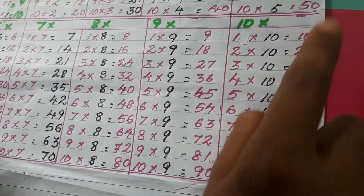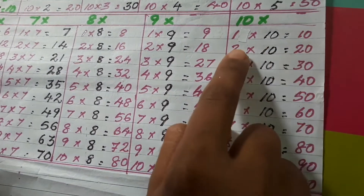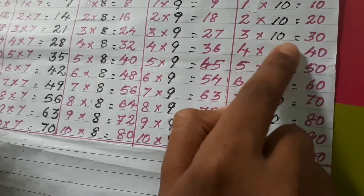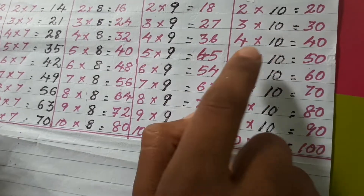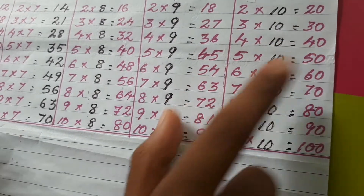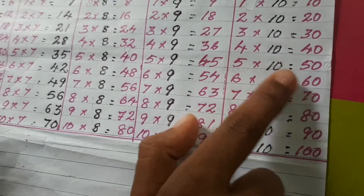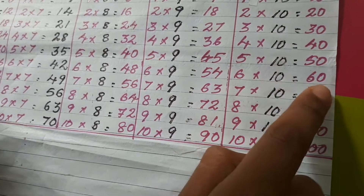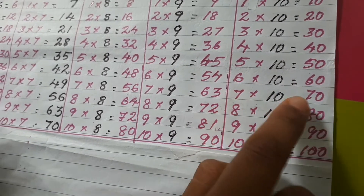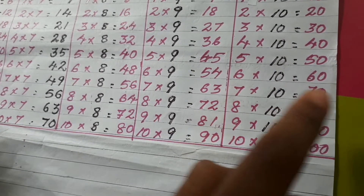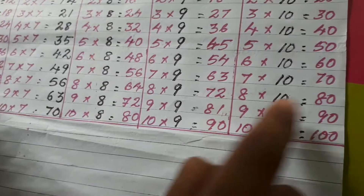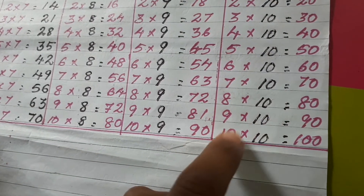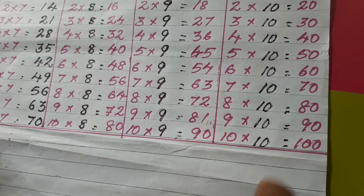1 ten is 10. 2 tens are 20. 3 tens are 30. 4 tens are 40. 5 tens are 50. 6 tens are 60. 7 tens are 70. 8 tens are 80. 9 tens are 90. 10 tens are 100.